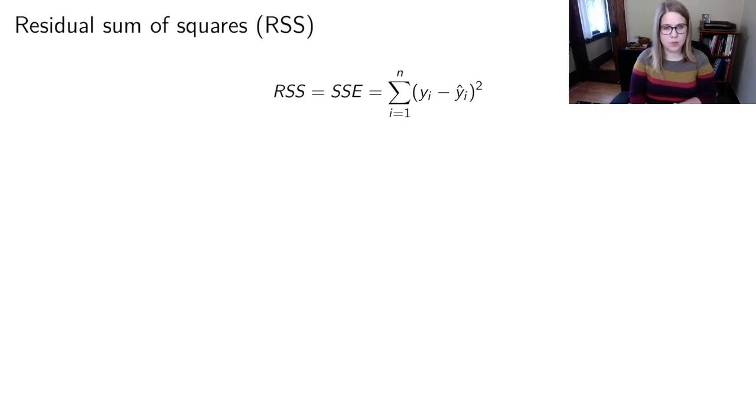So the residual sum of squares is RSS. We also sometimes call this SSE. We've seen this before in class. So this is where you take the Yi minus the Yi hat and you subtract them. So that's the residual and you square it and you sum it up. The residual is this piece, the sum is this piece and the squares are that piece. And you want to minimize the residual sum of squares, so you're looking for the smallest value.